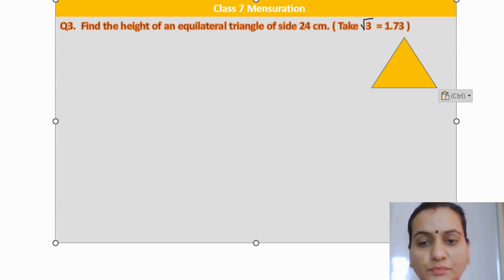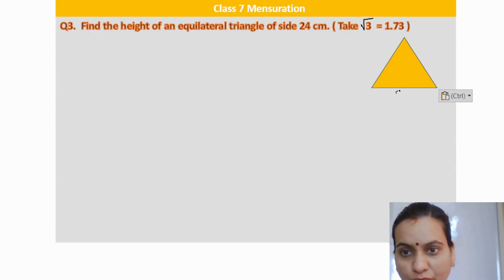Let us do this question, also from equilateral triangle. Find the height of an equilateral triangle of side 24 centimeter. The side is given to us, a's value is 24 centimeter. All three sides are same because it is an equilateral triangle. I can use the formula half base into height and equate that with root 3 by 4 a square.